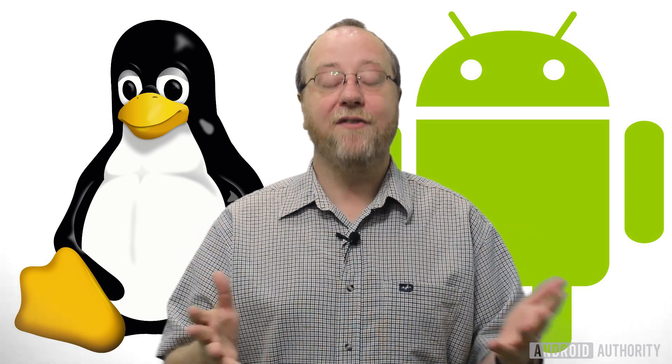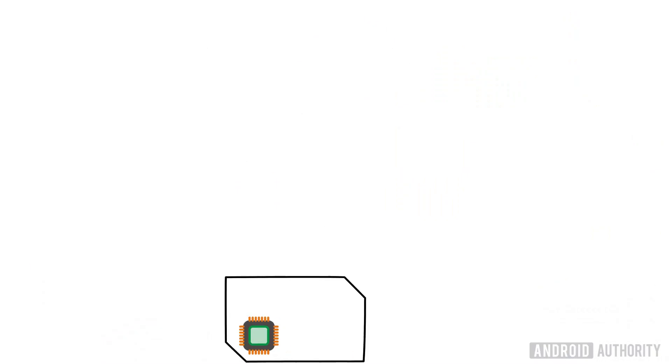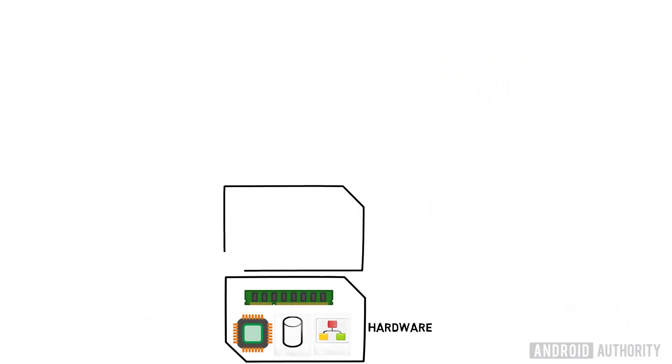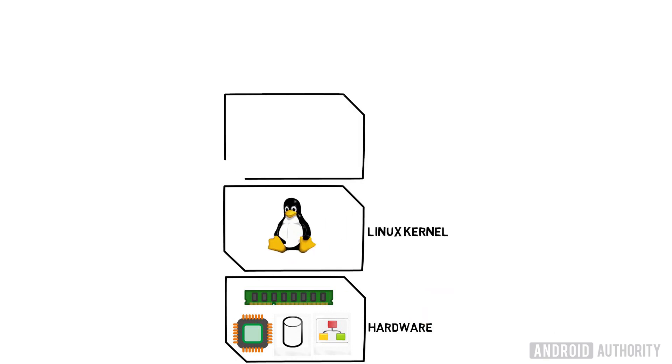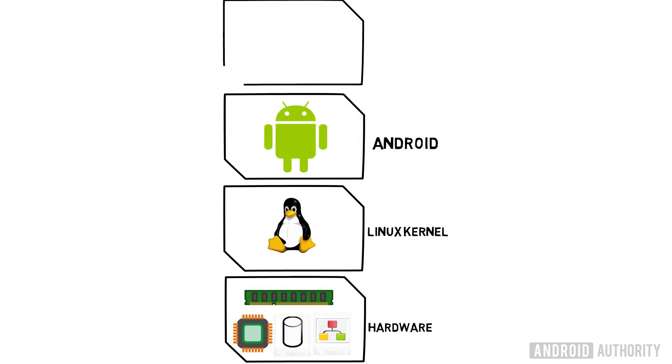At the heart of every operating system there is a kernel, and the kernel is responsible for managing the resources of the hardware — the memory, the files, and so on. I've got a whole video on what is a kernel, and I really recommend you go and watch that if you need to know more details about the role of Linux on mobile, on the desktop, and in servers.